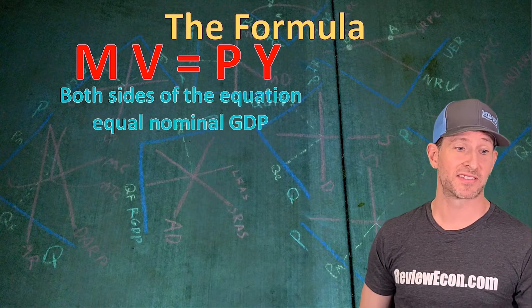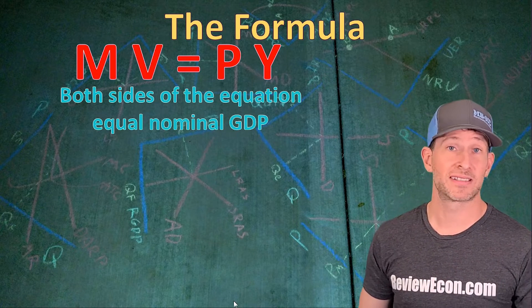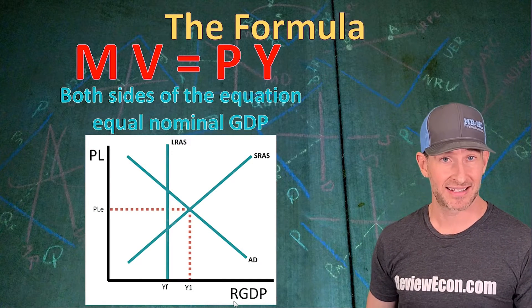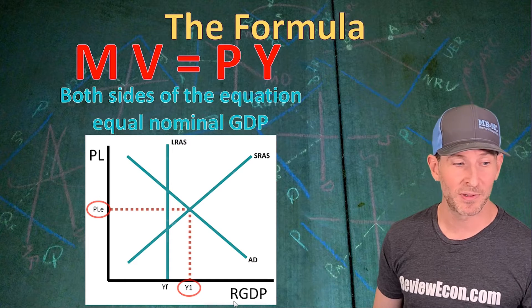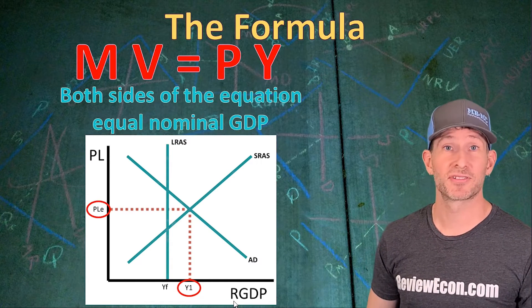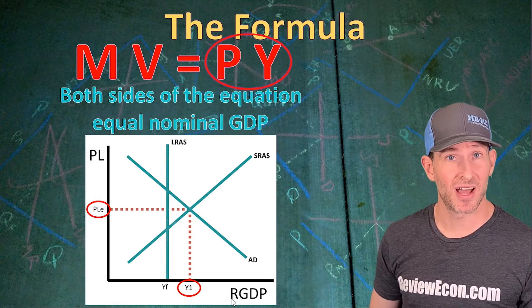Both sides of this equation equal nominal GDP. Of course, you've already seen the PY side of the equation on your ASAD model. The X axis is, of course, the real output and the Y axis is your price level. Multiply both of those together and that gives us nominal GDP.